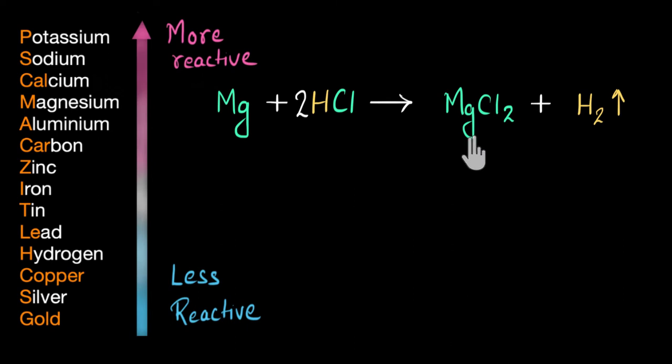See, salts are made up of ions. And here, magnesium chloride is made up of magnesium plus two ion, and chlorine minus one ion. And salts are electrically neutral. So over here,